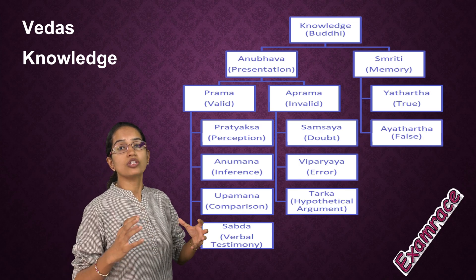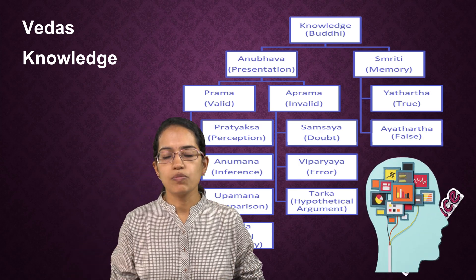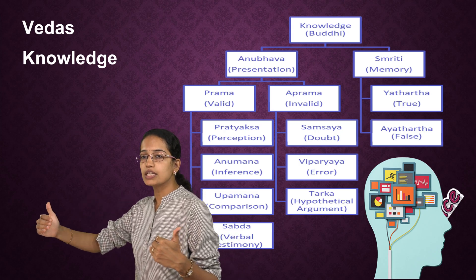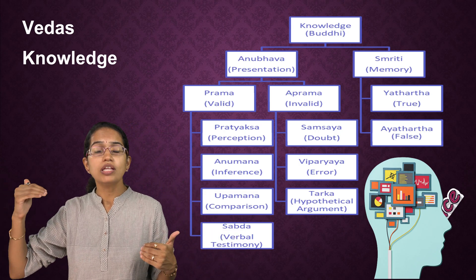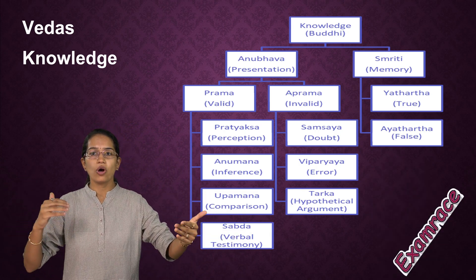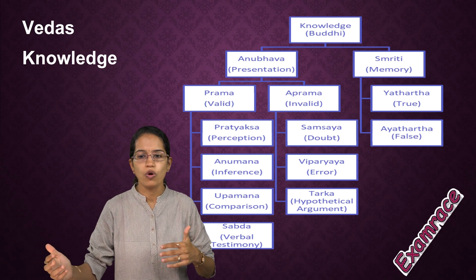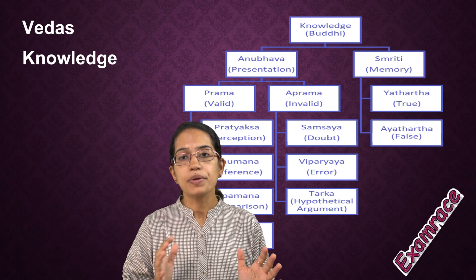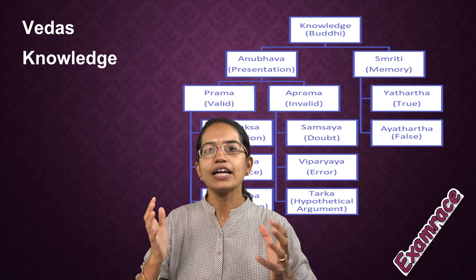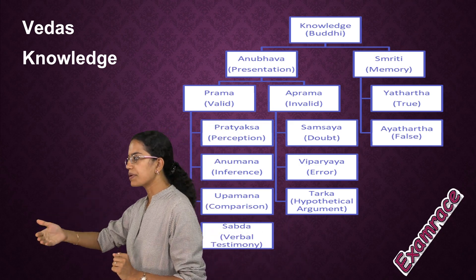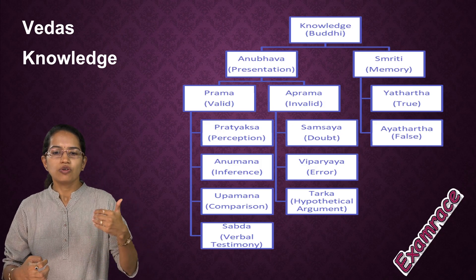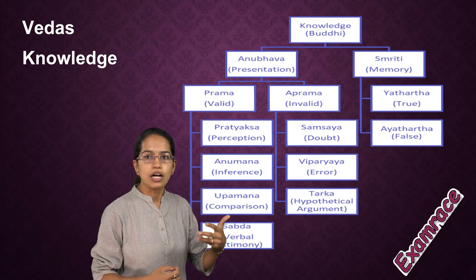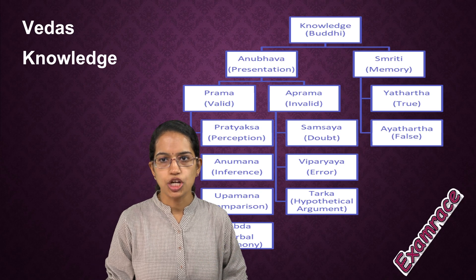Similar to the Vedas, we focus on knowledge, which is Buddhi. This knowledge could be classified as Anubhava or Smriti. Smriti is something based on memory, so it could be Yathartha or Ayathartha — that is, true or false. However, Anubhava or presentation could be Prama or Aprama. Prama is the valid knowledge we have; Aprama is the invalid knowledge. Valid knowledge could be in the form of Pratyaksha, Anumana, Upamana, and Shabda.